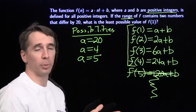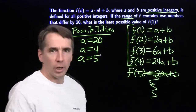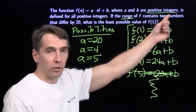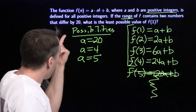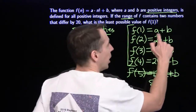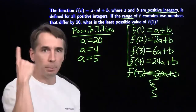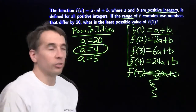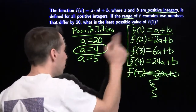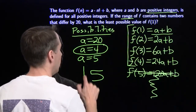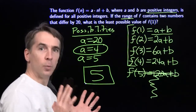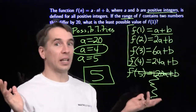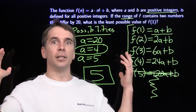So the only valid possibilities are a=20, a=4, or a=5. Since b must be a positive integer, the minimum value of b is 1. To minimize a+b, we choose a=4 and b=1, giving f(1) = a+b = 5. The key strategy throughout: when a problem looks confusing and you don't know how to solve it, get in there and do something.